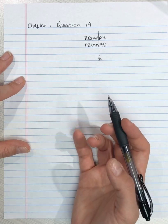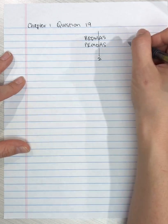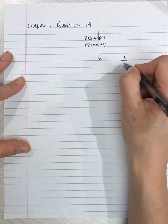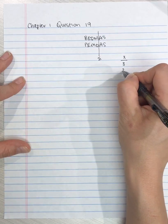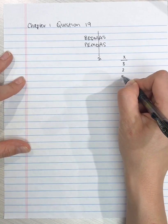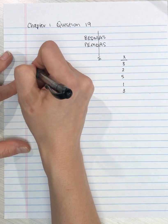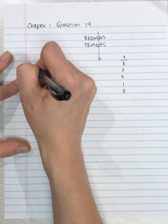So the data for question 19, we've got X scores and they are 3, 2, 5, 1, and 3. So we've got 5 scores. And in question 19a.